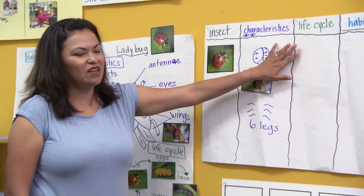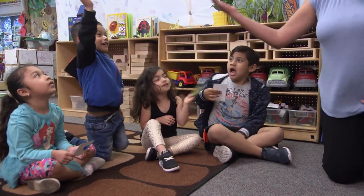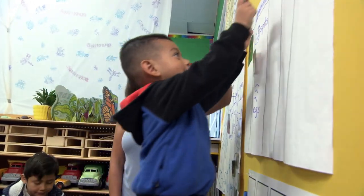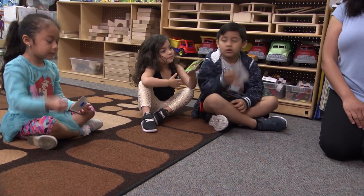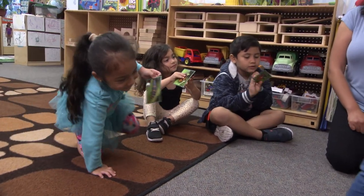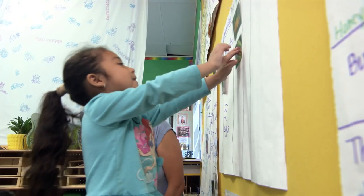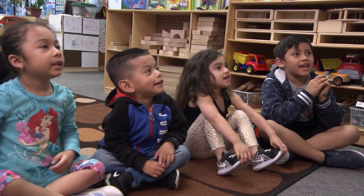You have the first stage of the life cycle. The first stage — please come up and put it on our chart. Say: I have the eggs. Perfect. Go ahead and place it right here under the life cycle. What stage is that? The eggs. The more children engage in conversations, the more opportunities they have to hear the language and also utilize it in an authentic setting, allowing them to develop a deeper understanding of what they're learning. So the first stage is the eggs.